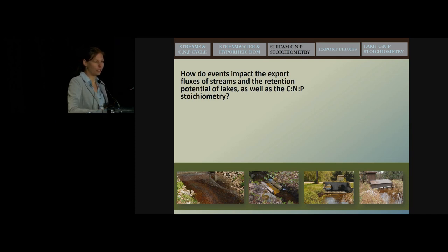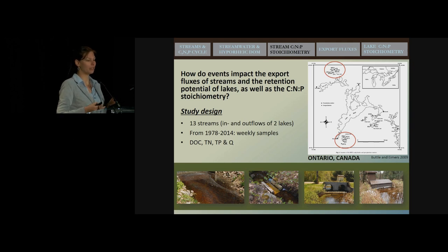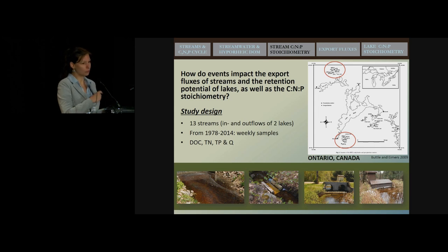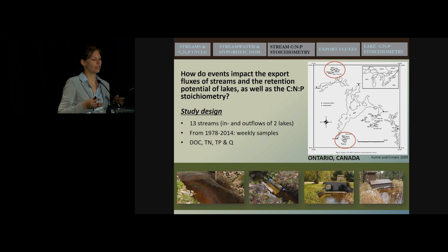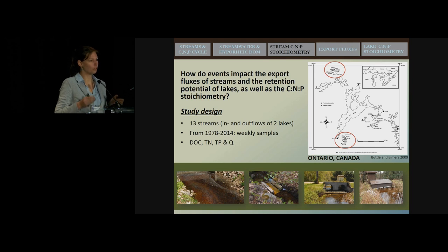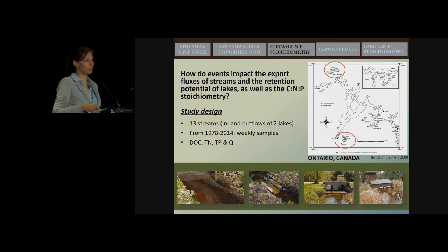We were lucky to work with a very large dataset, done at Trent University with Marcy Ginopoulos in Canada, in Ontario. We looked at two lakes which had 11 inflows and two outflows — in all, we studied 13 streams. We had really long time series: about 35 years of nearly weekly sampling data of DOC, total nitrogen, total phosphorus, and discharge.